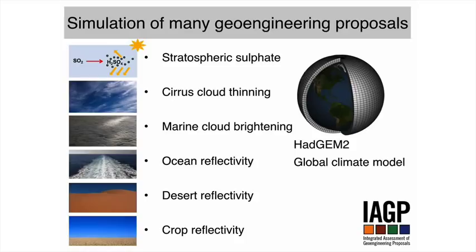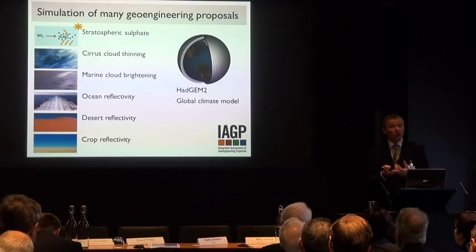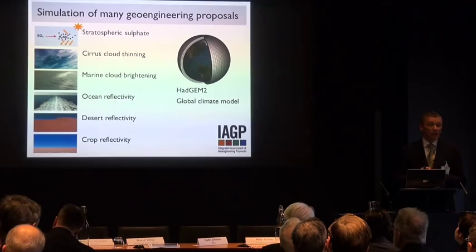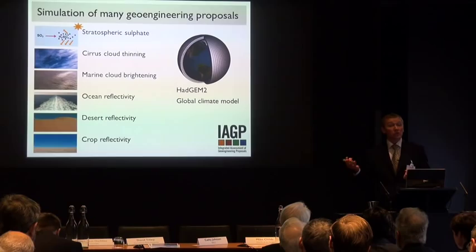Piers this morning showed you this slide, which lists the six different approaches that we simulated. Five of them involve solar radiation management — increasing the reflectivity of some part of the Earth's system to reflect away warming solar radiation. And then the one that's slightly different is cirrus cloud thinning, where you thin the cirrus cloud, enhancing the radiation emitted by the Earth's surface and atmosphere, and enhancing the amount of that radiation that goes back to space, which also has a cooling impact. Very similar to Jim's work, we've used one of the latest Met Office climate models, HadGEM2.